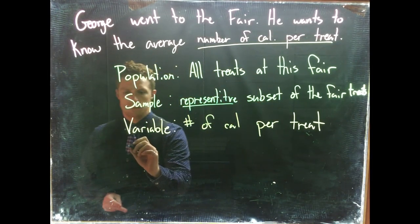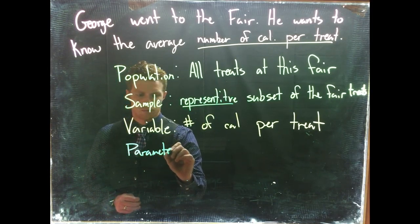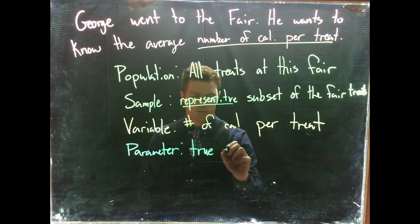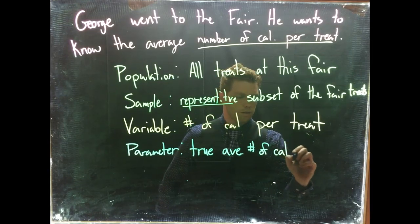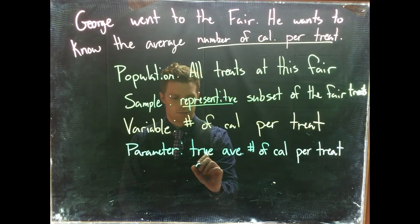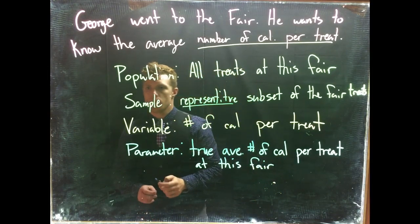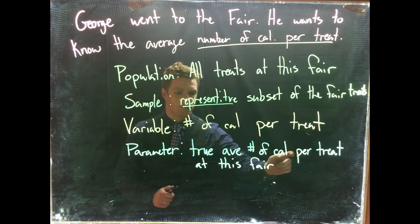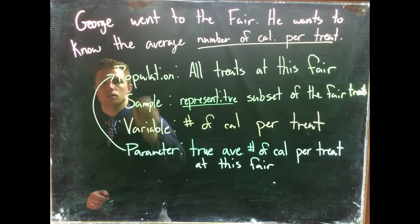But specifically, he's really interested in the parameter. And the parameter here is the true average number of calories per treat at the fair. So this is talking about the population.